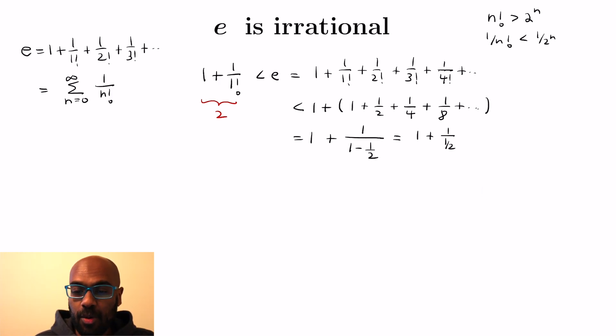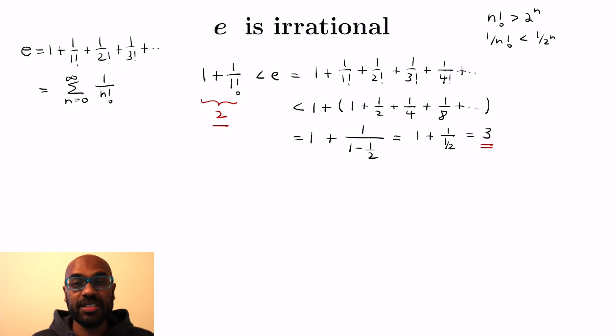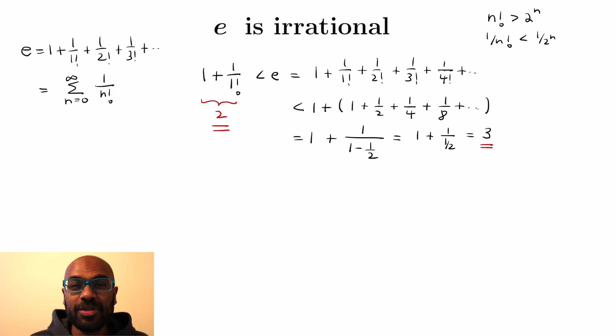So we get 1 plus 1 over one half, which is 3. And so e is sandwiched between 2 and 3, which means e definitely can't be an integer.